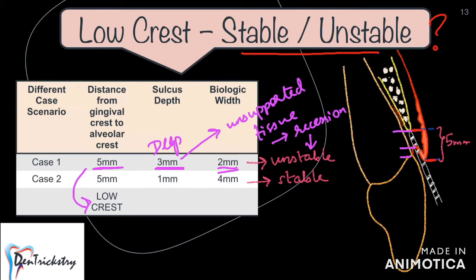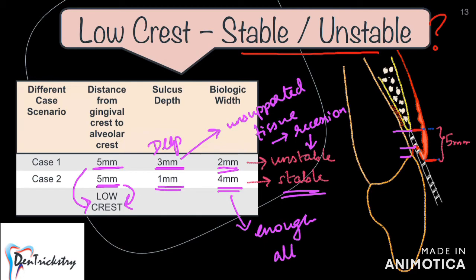Now take another situation where again the distance from the gingival crest to the alveolar crest is 5 millimeters — low crest category. But in this situation if you have only 1 millimeter sulcus and 4 millimeters of biologic width, that falls into the stable low crest category. Why? Because there is enough attachment apparatus and a significantly shallower sulcus. A patient in this situation will be much less susceptible to gingival recession, and stable low crest can be treated more or less like the normal crest.